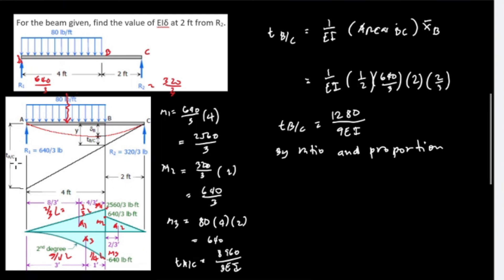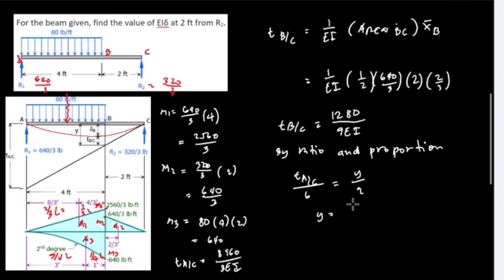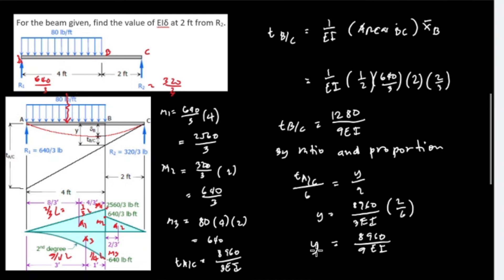By ratio and proportion using the big triangle: T(A to C) is to distance AC as y is to distance BC. So T(A to C) divided by 6 equals y divided by 2. Substituting T(A to C) = 8960/(3·EI): y = 8960/(3·EI) times (2/6), giving y = 8960/(9·EI).